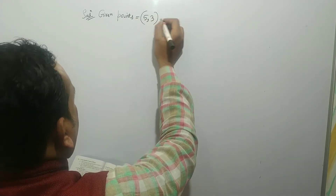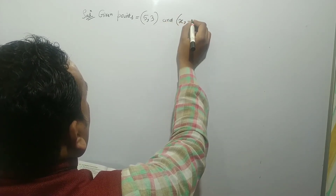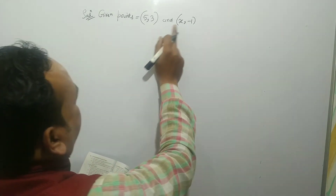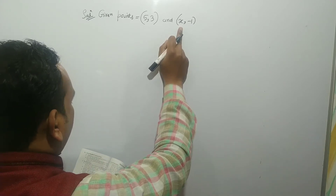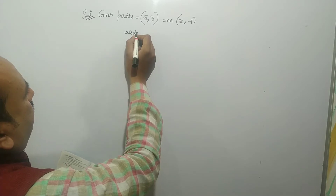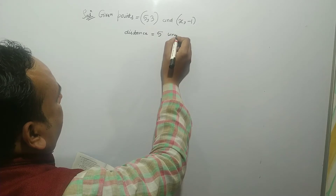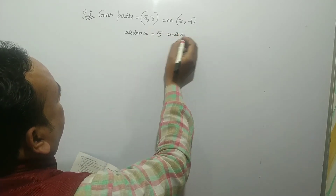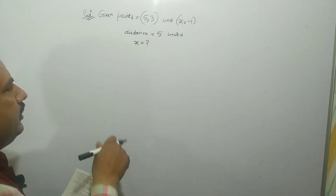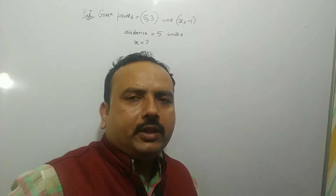दो points के coordinates हैं: (5, 3) और (x, -1)। इसमें एक coordinate x missing है, जिसकी value हमको find करनी है। इनके बीच की जो distance है वह given है। Distance between the given points is 5 units, and we have to find the value of x। Points और उनके बीच की distance given है।